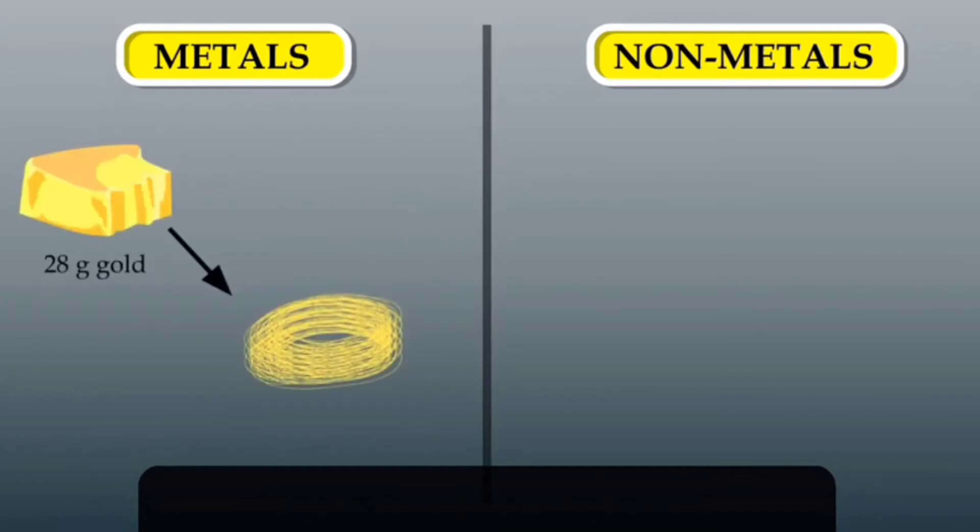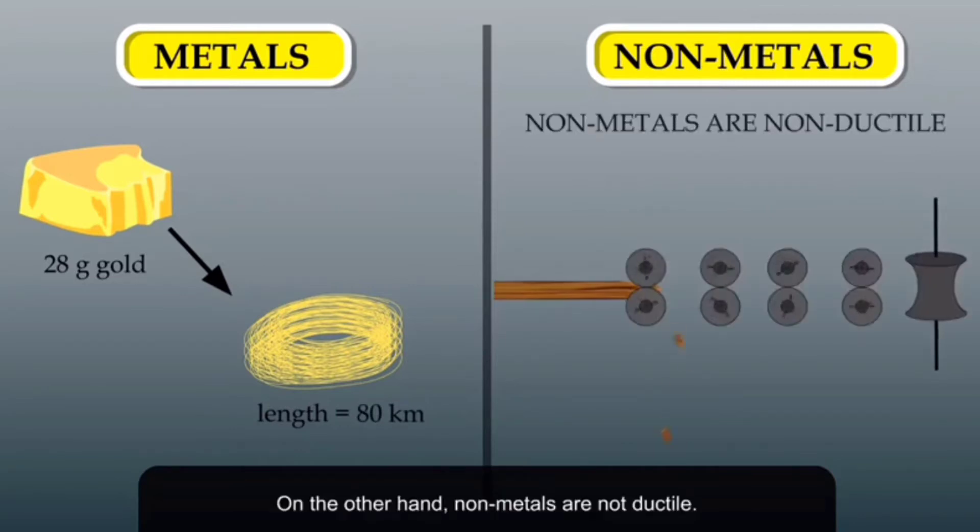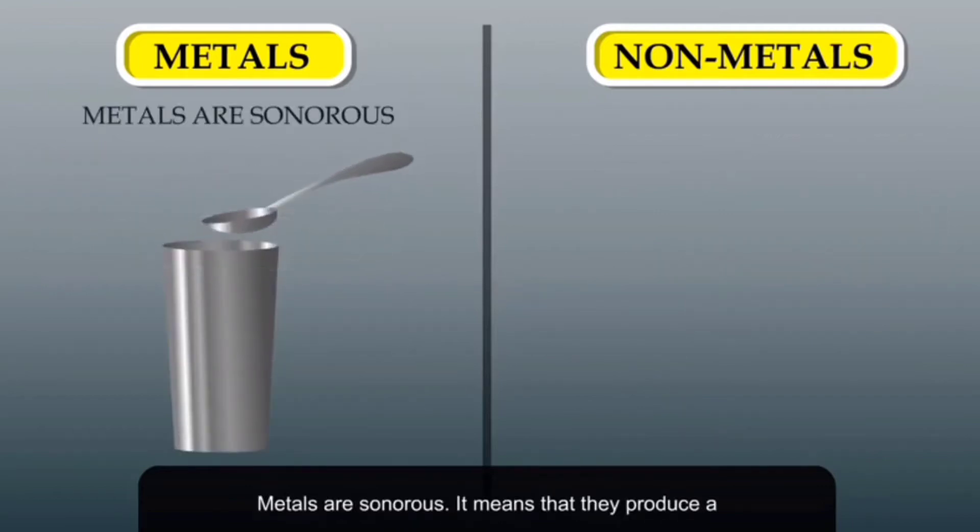Suppose we make wire of about 28 grams of gold. How long can this wire be? Any guess? One meter? 100 meters? Would you believe we can draw this much gold into a wire 80 kilometers long? On the other hand, non-metals are not ductile. You cannot stretch wood and make a wooden wire out of it, can you?